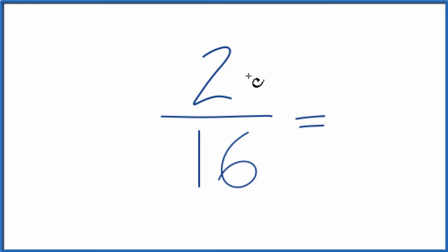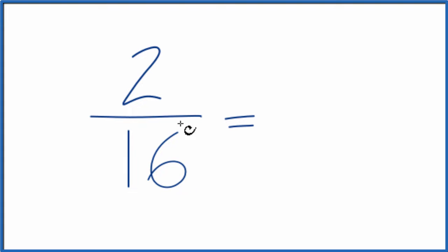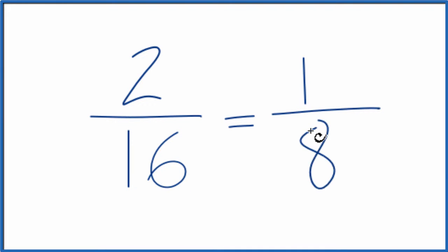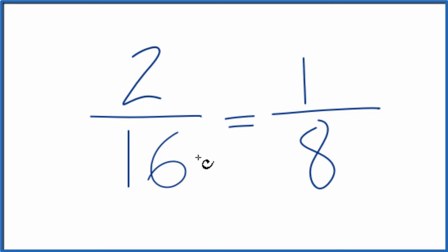We divide the numerator by 2 and the denominator by 2 to simplify 2 over 16. 2 divided by 2 is 1, and 16 divided by 2 is 8. So we've simplified 2/16 down to 1/8. These are equivalent fractions — if you divide 1 by 8 or 2 by 16, you'll get the same value. We've simply reduced 2/16 to its lowest terms: 1/8.